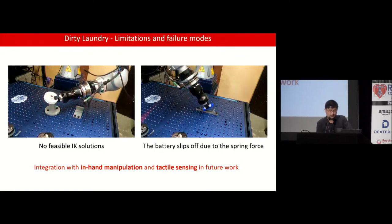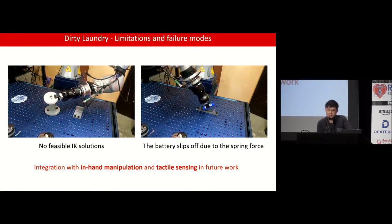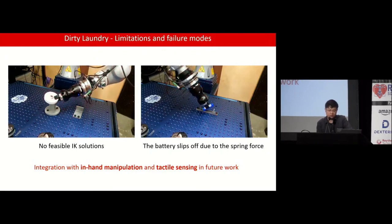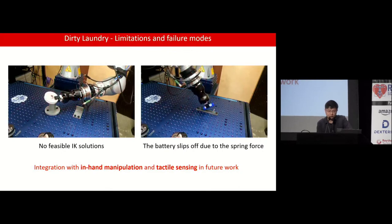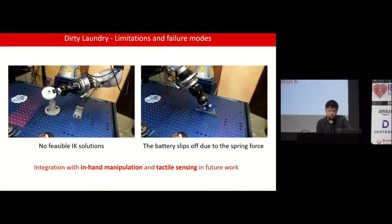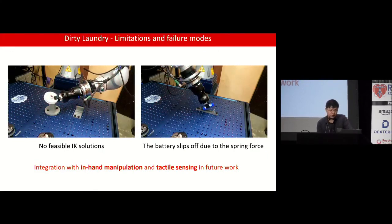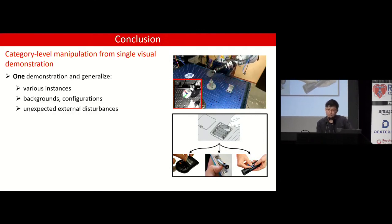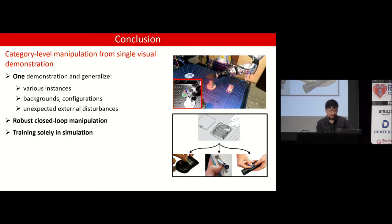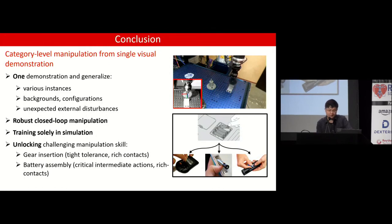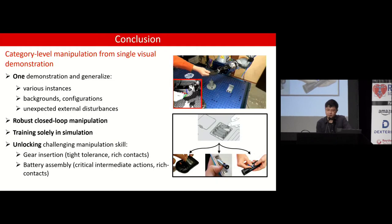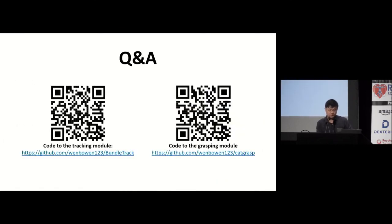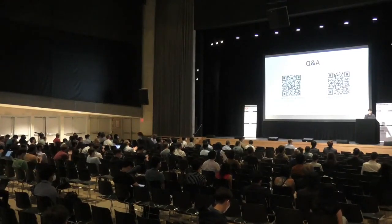We also have limitations and failure modes. A common failure during anchor-and-pivot is that due to rich contacts, the gear's pose changes significantly and the robot arm wants to lift more to adjust, but due to joint limits it cannot continue. On the right, due to the strong spring force, the battery is ejected — this is because we don't have tactile sensing to detect this beforehand. In the future, it will be interesting to integrate in-hand manipulation and tactile sensing. To summarize, we propose a category-level manipulation framework from single visual demonstration that generalizes to various instances, backgrounds, configurations, and external disturbances, requires only simulation training, and unlocks challenging skills like gear insertion and battery assembly where original baselines achieve zero success rate.